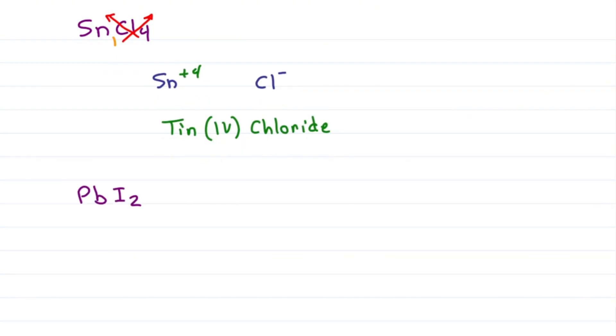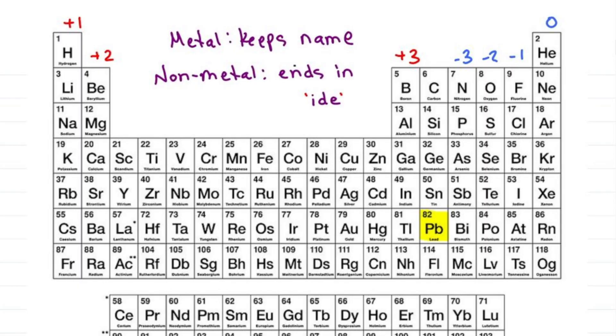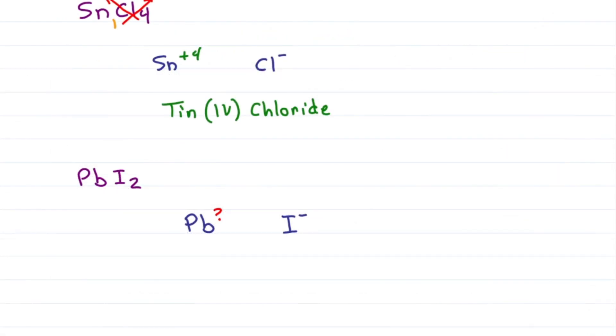What about PbI2? That's lead, a post-transition metal, and iodine minus 1. Draw the invisible one. Reverse crisscross. We know that iodine is minus 1 and now we see that lead is plus 2, giving me lead 2 iodide.